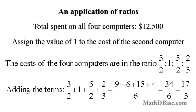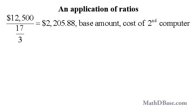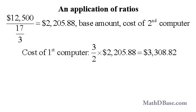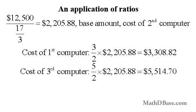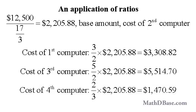Adding the terms with LCD of 6, we get 3/2 + 1 + 5/2 + 2/3 = (9 + 6 + 15 + 4) over 6 = 34/6, which reduces to 17/3. The quotient is $12,500 ÷ 17/3 ≈ $2,205.88, which is the base amount and the cost of the second computer. The first computer costs 3/2 × $2,205.88 = $3,308.82; the third costs 5/2 × $2,205.88 = $5,514.70; and the fourth costs 2/3 × $2,205.88 = $1,470.59.